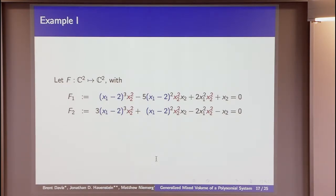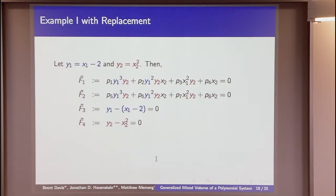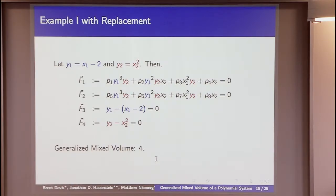Our generalized mixed volume: we fix an algebraic set based on the replacement scheme, and we let the coefficient matrix A be generic. The trivial replacement corresponds to the number of isolated roots of f, and it's less than or equal to the generalized mixed volume. The all-monomial replacement gives us a situation where the mixed volume equals the generalized mixed volume. For our example with x1 minus 2 and x2 squared appearing repeatedly, the mixed volume is 8 and root count is 4. Choosing those as replacement sub-expressions and letting coefficients be generic gives a generalized mixed volume of 4.